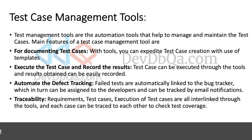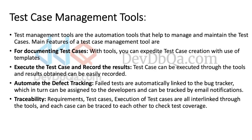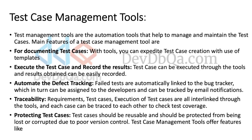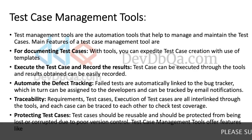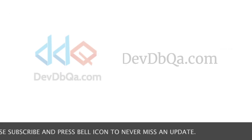Traceability is another feature: requirements, test cases, and execution are all interlinked through the tools so each case can be traced to check test coverage. Additionally, test case management tools protect test cases from being lost or corrupted due to poor version control, offering features like version control, traceability, automated defect tracking, test execution, and result recording.